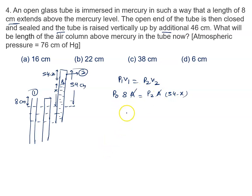Area will cancel. We will calculate the value of P2. It is given by 8 P0 upon 54 minus x.